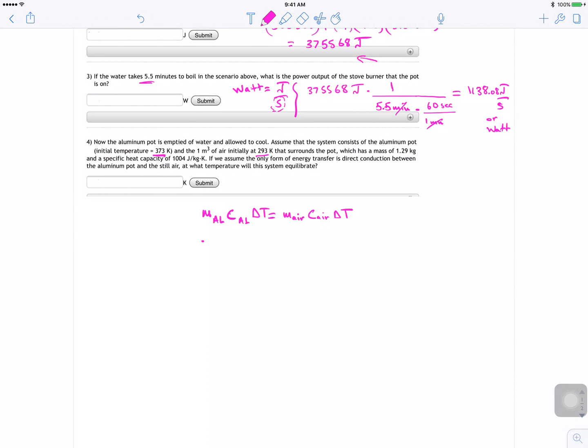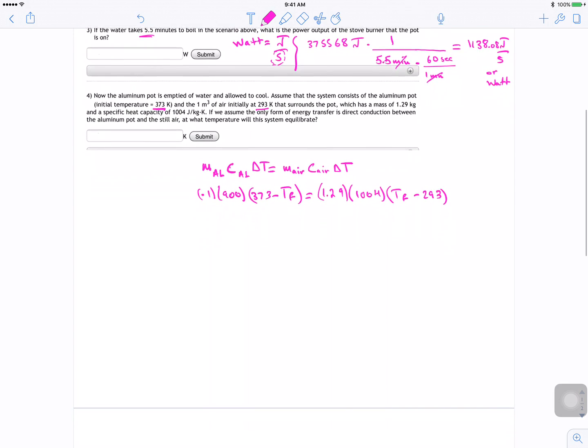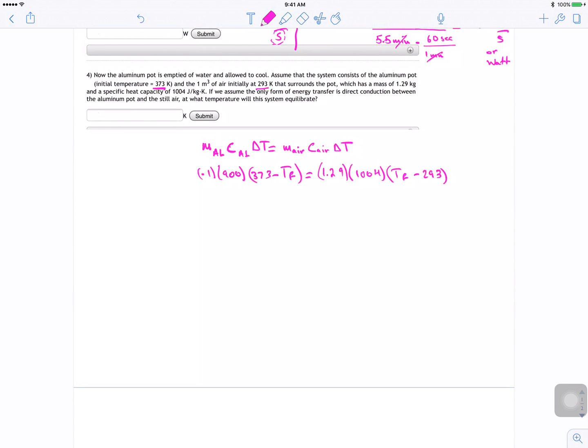Look at those guys: 0.1 times 900 times (373 minus T final) equals 0.29 times 1004 times (T final minus 293). Okay, so just work the algebra out, and then my answer was for T final is equal to 298.21 Kelvin.